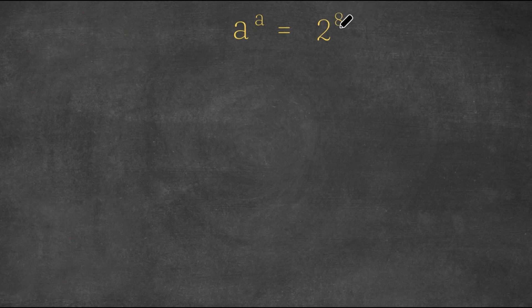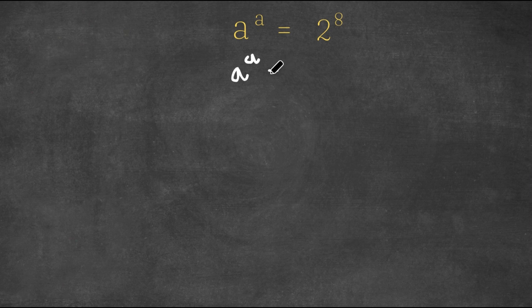Now 8 is the same thing as 4 times 2, right? So now I'm going to write this as a to the power of a is equal to 2 to the power of 4 times 2.